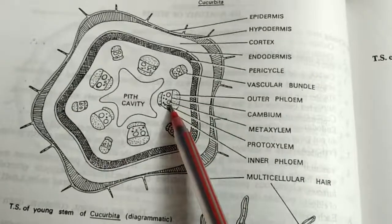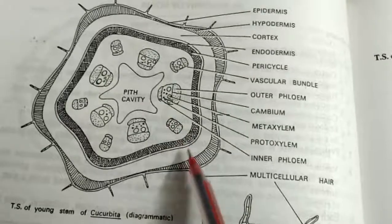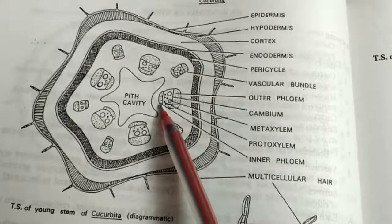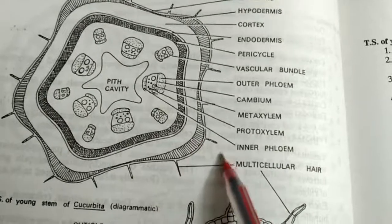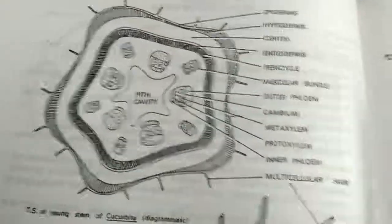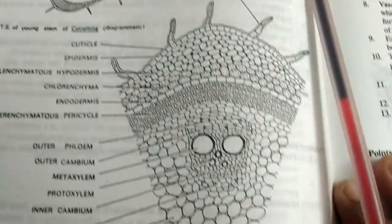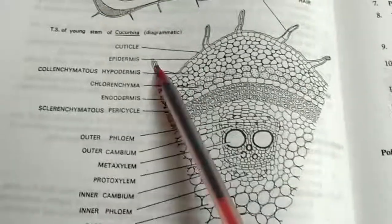This is the cambium, metaxylem, protoxylem, then inner phloem. In the cellular diagram it will be clear. And these are multicellular hairs which are unbranched. This is the cellular representation. So cuticle.